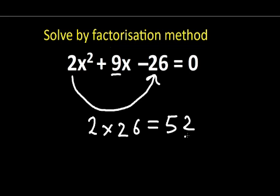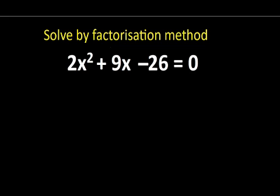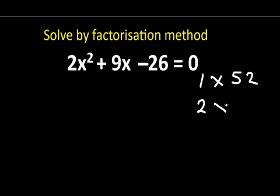So now let's find the factors of 52. We have 52 divided by 1, which gives us 52, so we have 1 times 52. Then 52 divided by 2 gives us 26, so 2 times 26 equals 52.